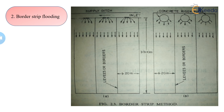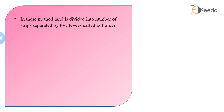After supplying and discharging water from the inlet at the starting point, once it reaches the lower end, the water supply is cut off. In the border strip method, land is divided into strips separated by low levees called borders — hence the name border strip flooding method.